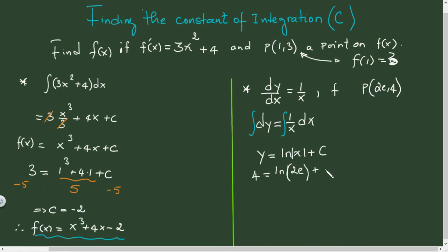And we're going to say 4 equals to ln of 2 plus ln of e, and then plus c. All right. So this is one of the particularity of the logarithm.